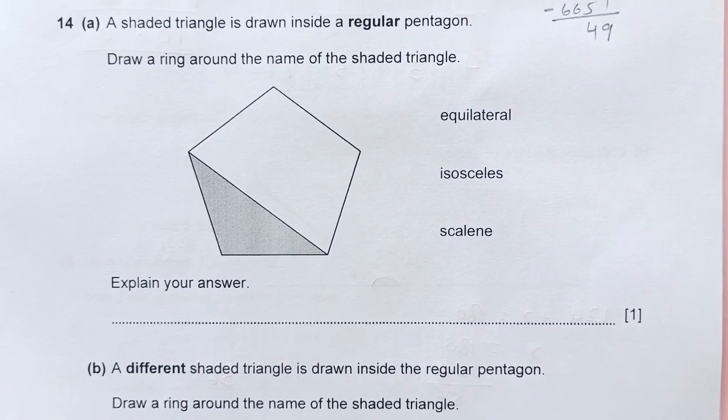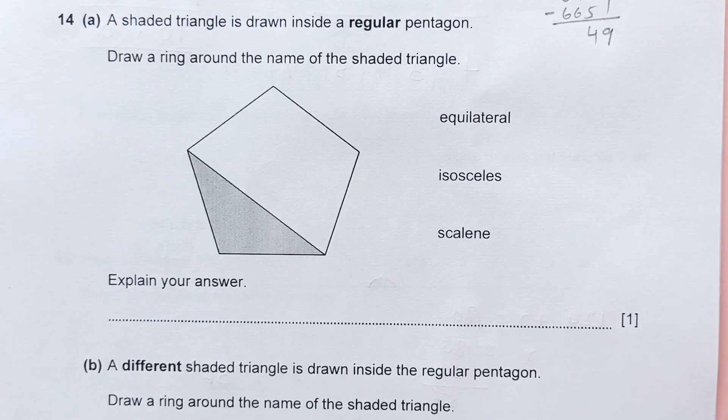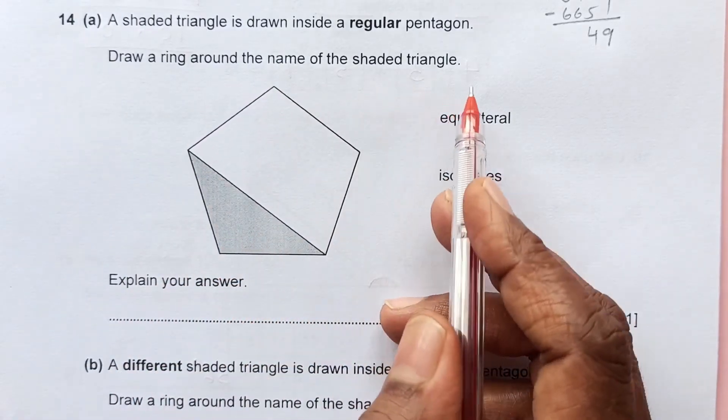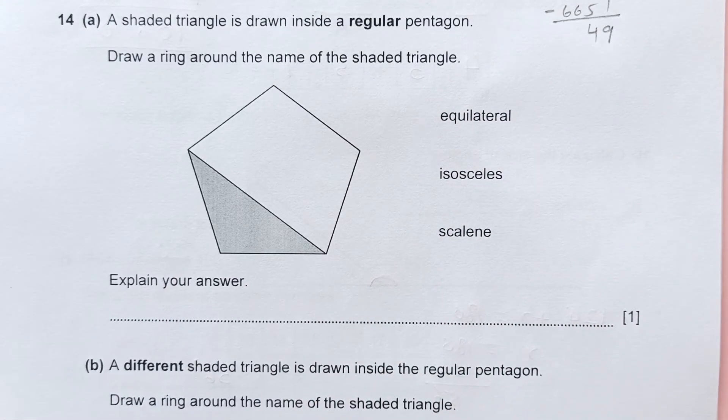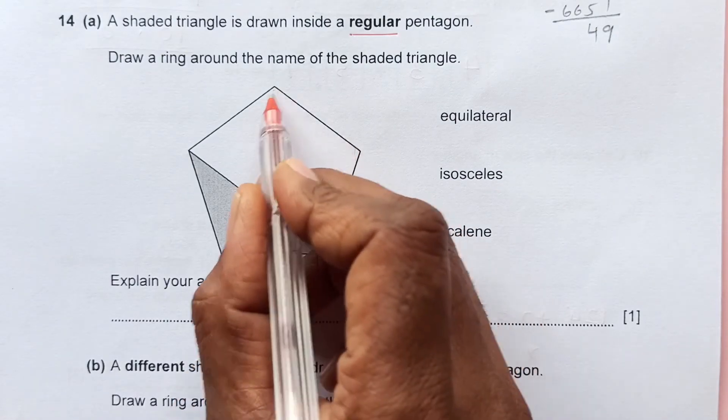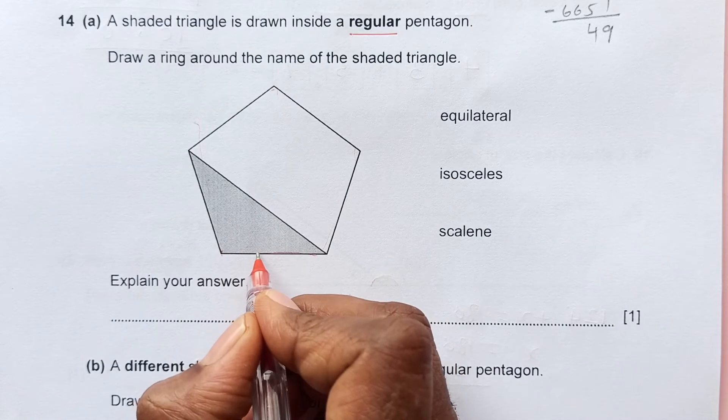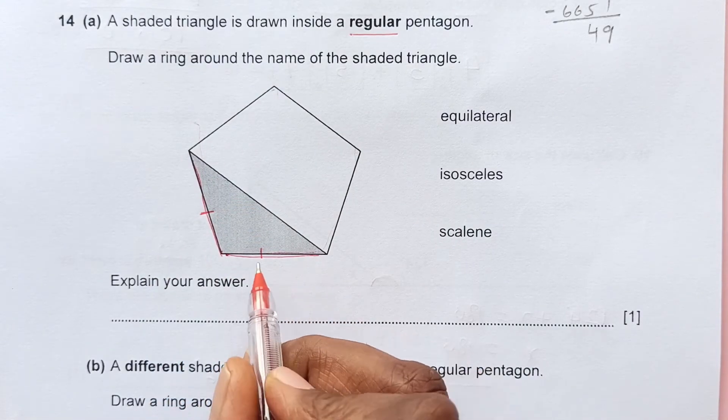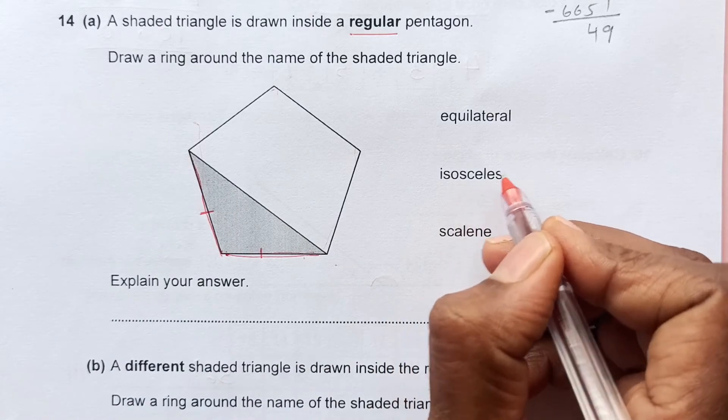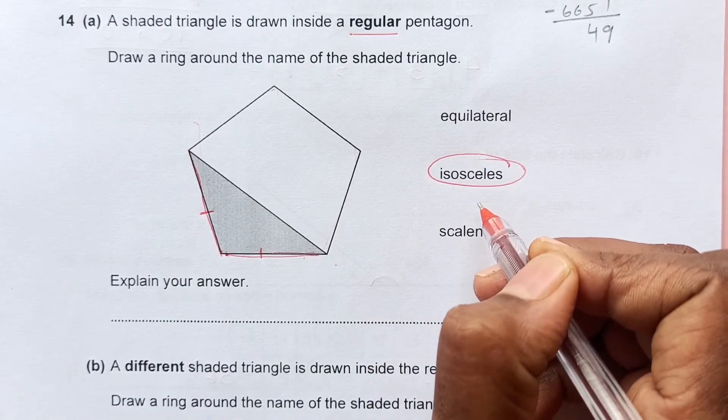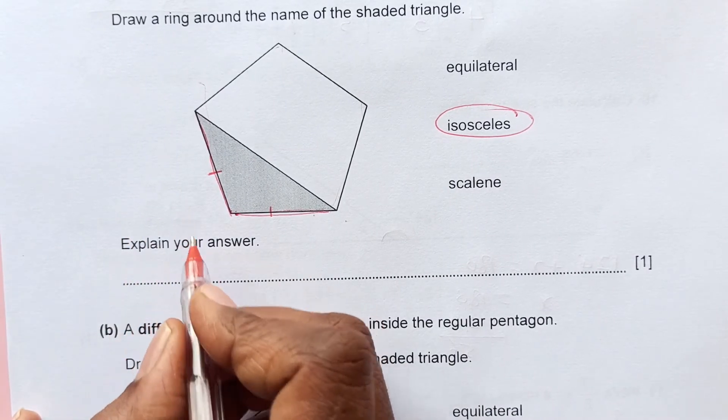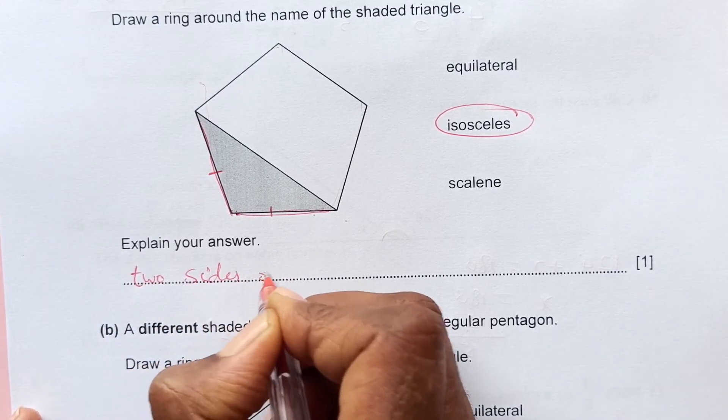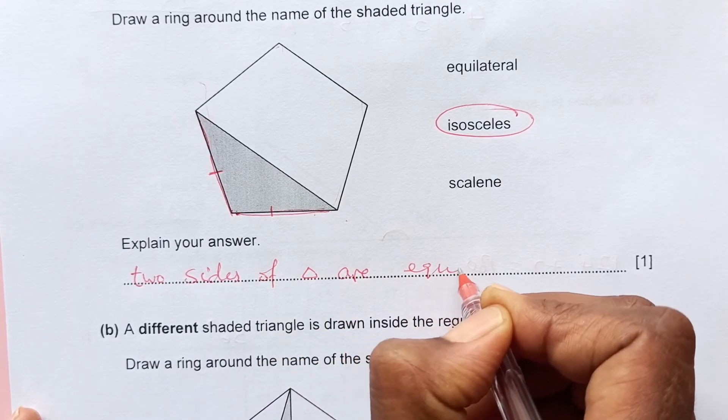Number 14. A shaded triangle is drawn inside a regular pentagon. Draw a ring around the name of this shaded triangle. We are given a regular pentagon. Regular pentagon means all the sides are equal. If all sides are equal, this side and this side will be equal because these are sides of the pentagon. If two sides are equal and this side is not equal, the triangle is isosceles. Explanation: two sides are equal because two sides of the triangle are equal here.